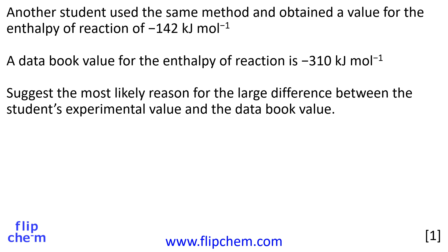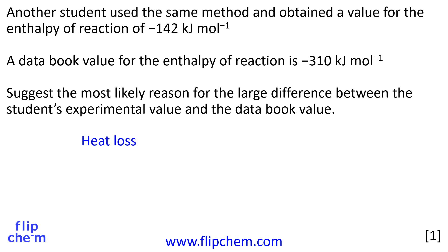Here's the next part of the question. Another student used the same method and obtained a value for the enthalpy of reaction of minus 142 kilojoules per mole. A data book value for the enthalpy of reaction is minus 310 kilojoules per mole. Suggest the most likely reason for the large difference between the student's experimental value and the data book value. The data book value is probably more reliable. The student's value is less exothermic. The most likely reason for this is that there is heat loss to the surroundings.